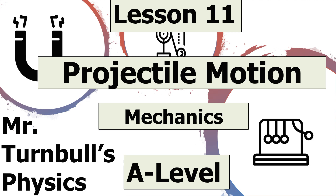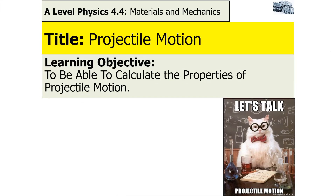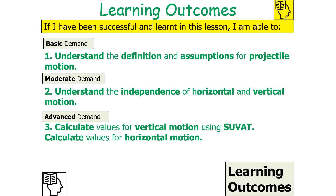Hello and welcome to this lesson on projectile motion, which is part of the mechanics topic in AQA A-level physics. In today's lesson we're going to be looking at how to calculate the properties of projectile motion. If we are successful, we should be able to understand the definition and assumptions for projectile motion, understand the independence of horizontal and vertical motion, and calculate values for both vertical and horizontal motion.